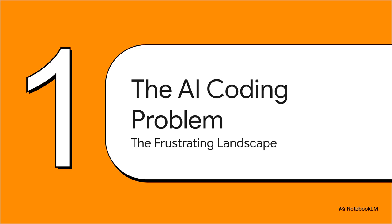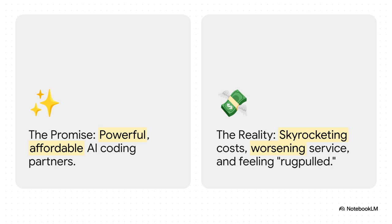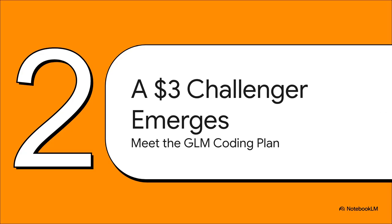First up, the problem. To really get why a tool like GLM is such a big deal, you first have to understand the mess that developers are dealing with right now. The promise was just incredible, wasn't it? We were all supposed to have these brilliant, cheap AI sidekicks helping us build the future. But the reality has been a bit different. Costs have gone through the roof, the service can be flaky, and a lot of the early believers feel like the rug was yanked out from under them. But all that frustration led to a search for a better way — and that's where we meet the hero of our story, the GLM coding plan.